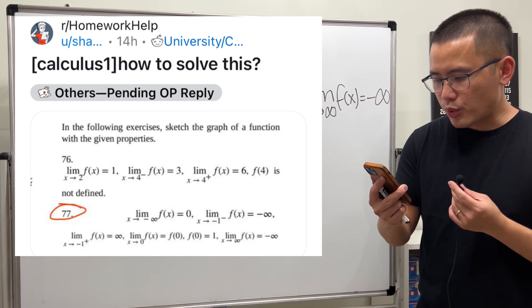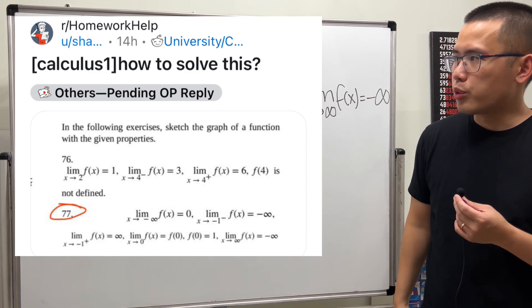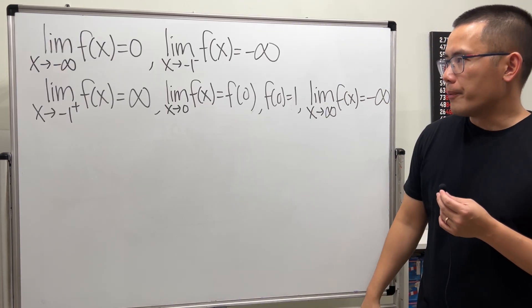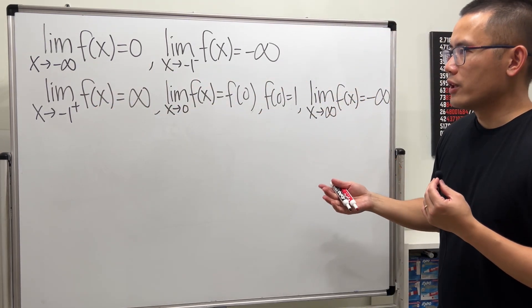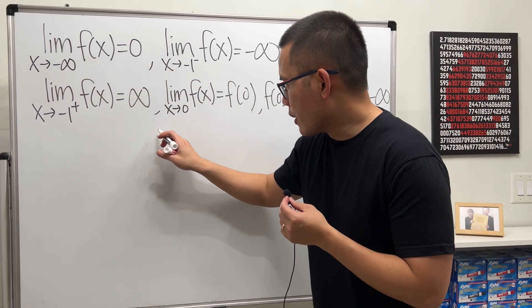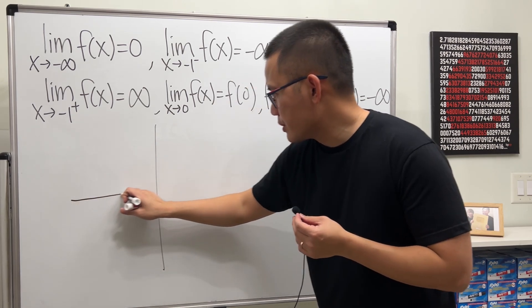We are going to sketch a possible graph of a function with the following properties. Here we go. We have these limit conditions, and let's just go through one of them at a time. Right here, let's just put down the x and y axis.